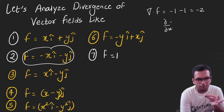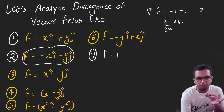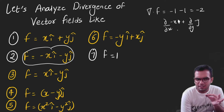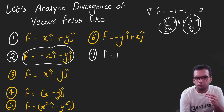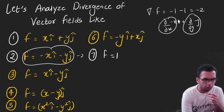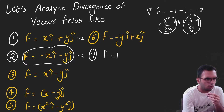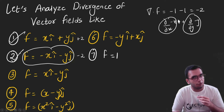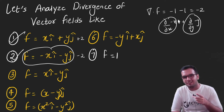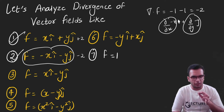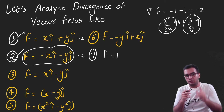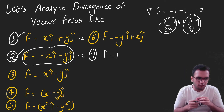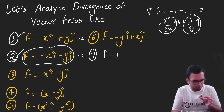The divergence is constant throughout this field because it is again a symmetric field. This field is represented by the equation -x î - y ĵ. Calculating its divergence: del dot F = d/dx(-x) + d/dy(-y) = -1 + (-1) = -2. The first example gave +2 and this gives -2. We can see everything from the perspective of physics — which is the intention behind this playlist on vector calculus.